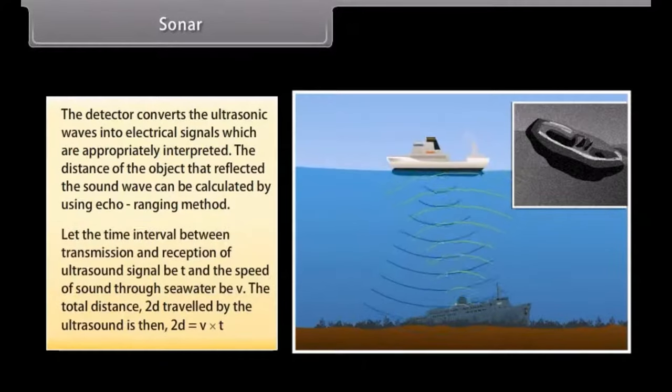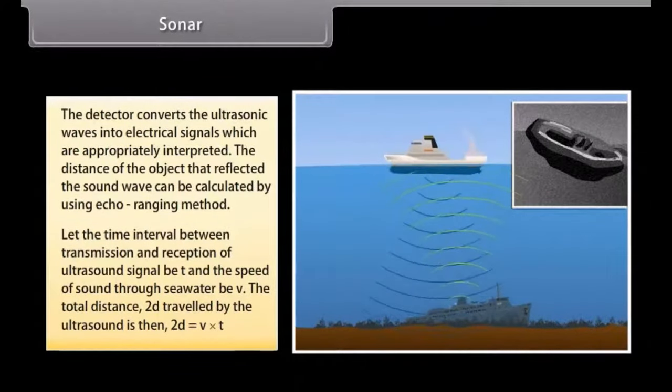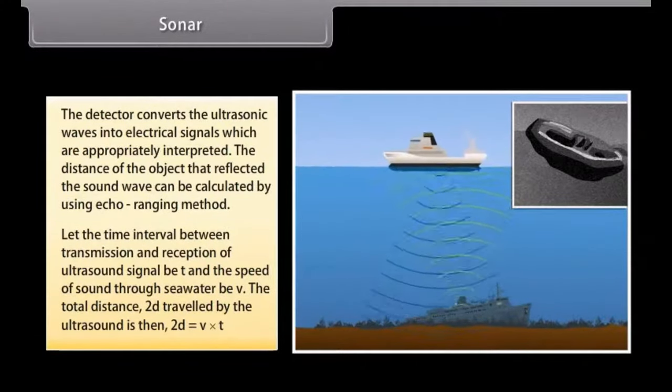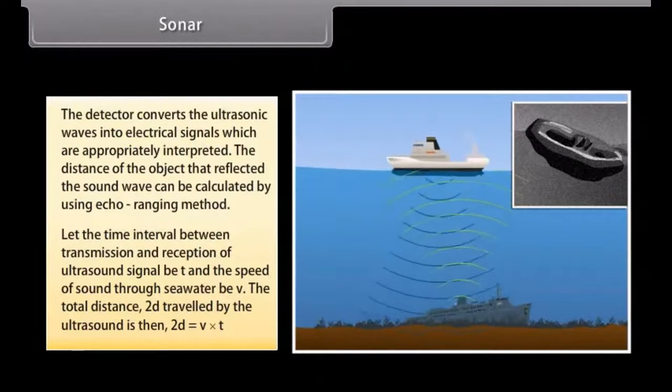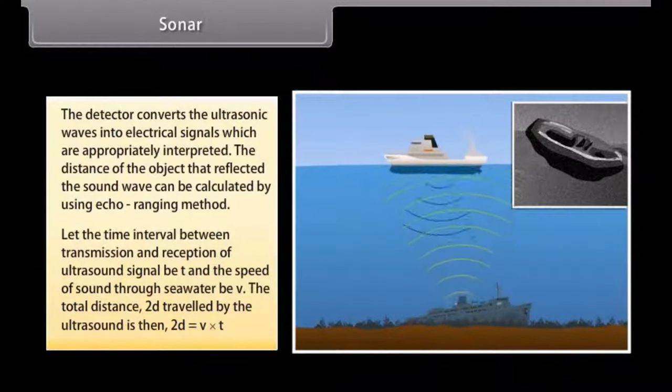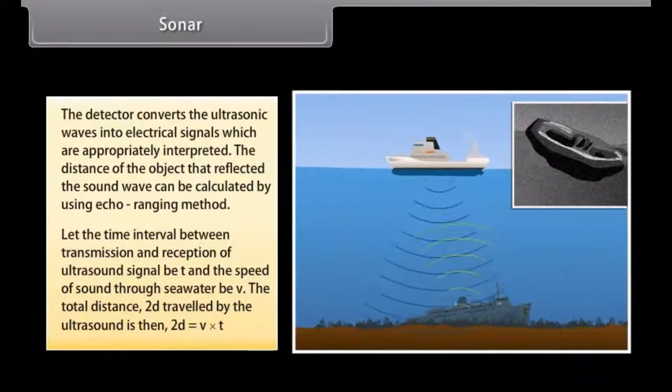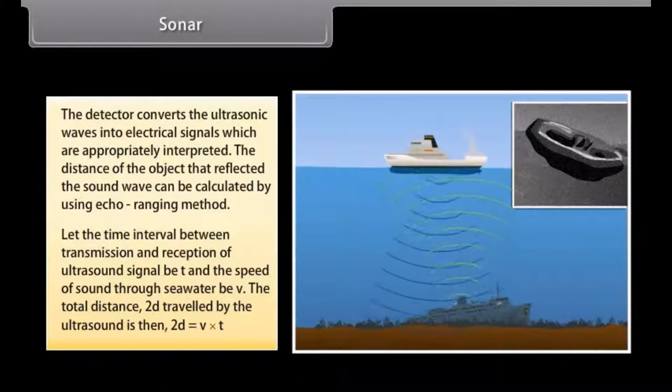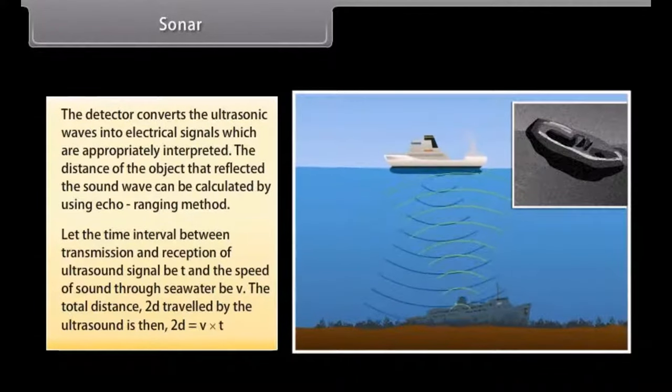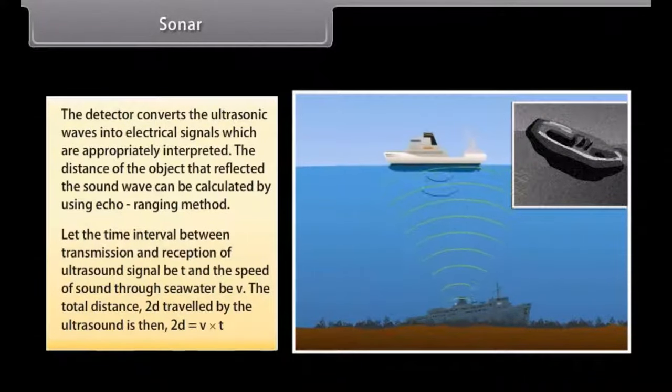Let the time interval between transmission and reception of ultrasound signal be T and the speed of sound through sea water be V. The total distance 2D travelled by the ultrasound is then 2D is equal to V into T. This is the echo ranging method.